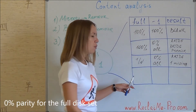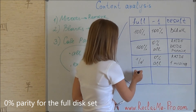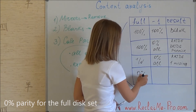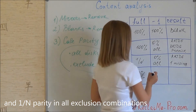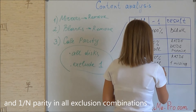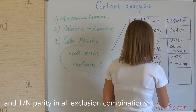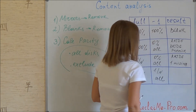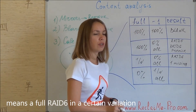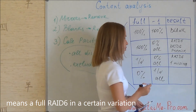Zero parity for the full disk set and 1/Nth parity in no exclusion combinations means a full RAID 6 in a certain variation.